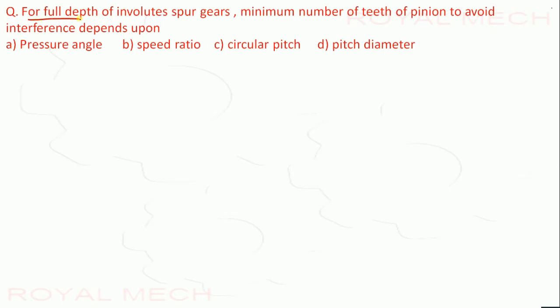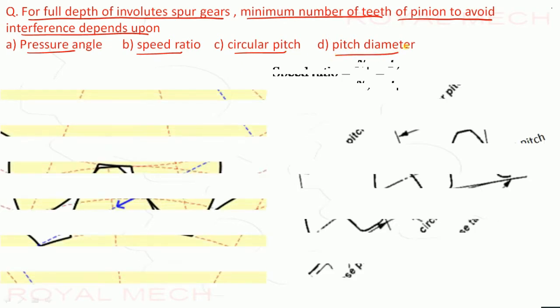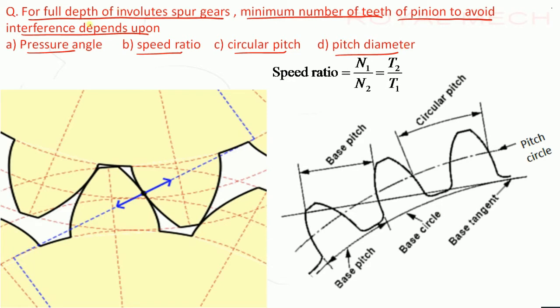For full depth involute spur gears, minimum number of teeth of pinion to avoid interference depends upon: pressure angle, speed ratio, circular pitch, or pitch diameter. So the question is about full depth involute spur gear with minimum number of teeth. And to avoid interference it depends upon, out of this we have to answer.